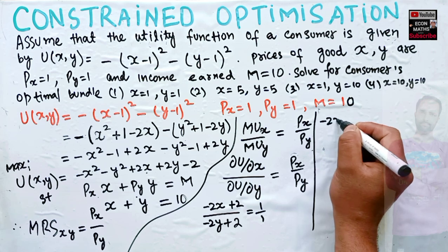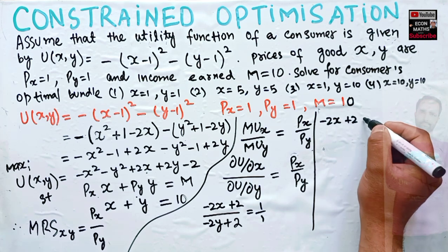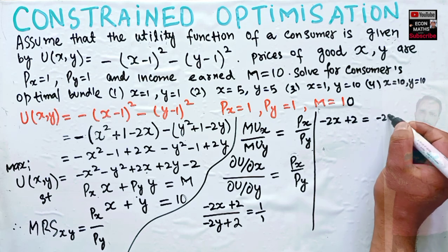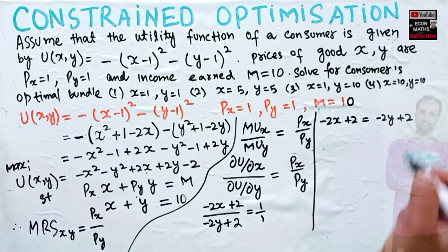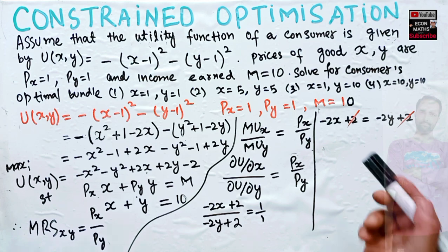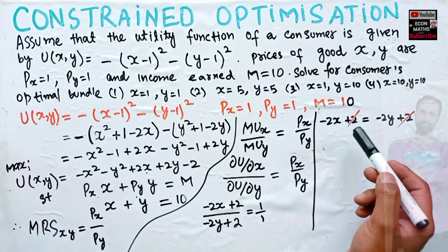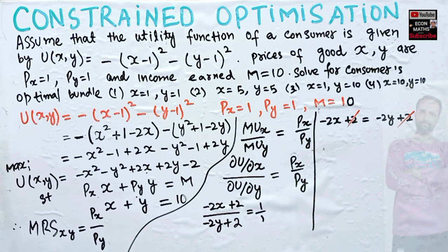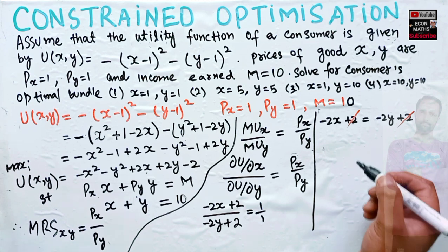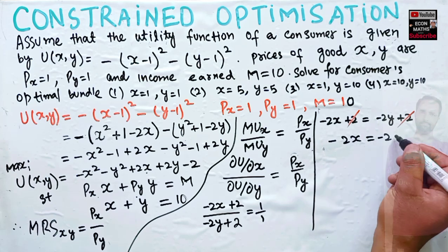Cross multiplying: minus 2x + 2 = minus 2y + 2. We can cancel the 2 on both sides, or transpose: minus 2x = minus 2y.